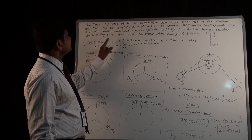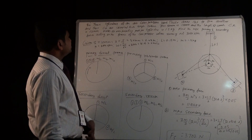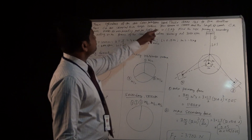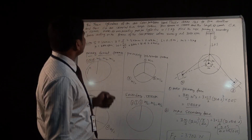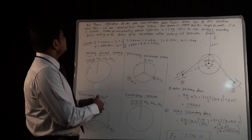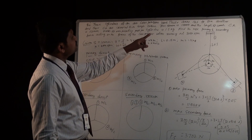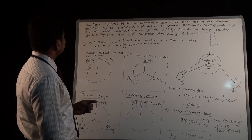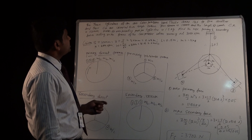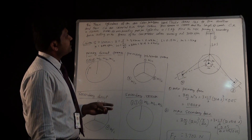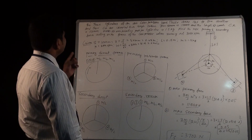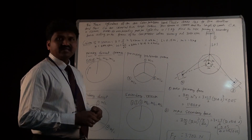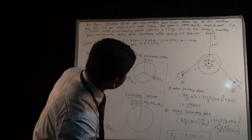Now let us solve one numerical example on radial engines. The problem statement: three cylinders of an air compressor have their axes 120 degrees to one another, and their connecting rods are coupled to a single crank. The stroke is 100 mm and the length of each connecting rod is 150 mm. The mass of reciprocating parts per cylinder is 1.5 kg. Find the maximum primary and secondary forces acting on the frame of the compressor when the engine is running at 3000 rpm.